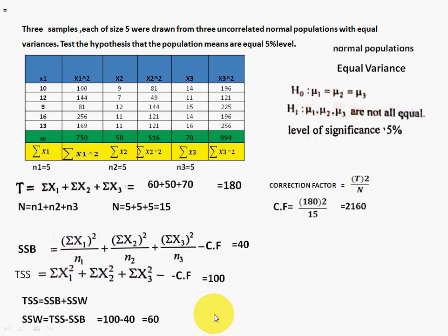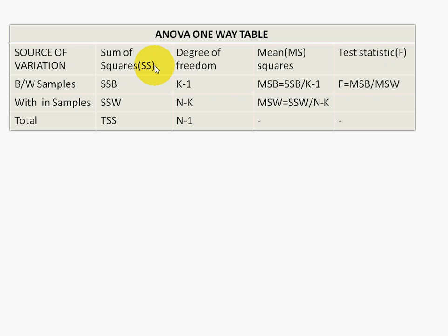To clarify the terms: SSB stands for sum of squares between the samples, and SSW stands for sum of squares within the samples. TSS stands for total sum of squares.